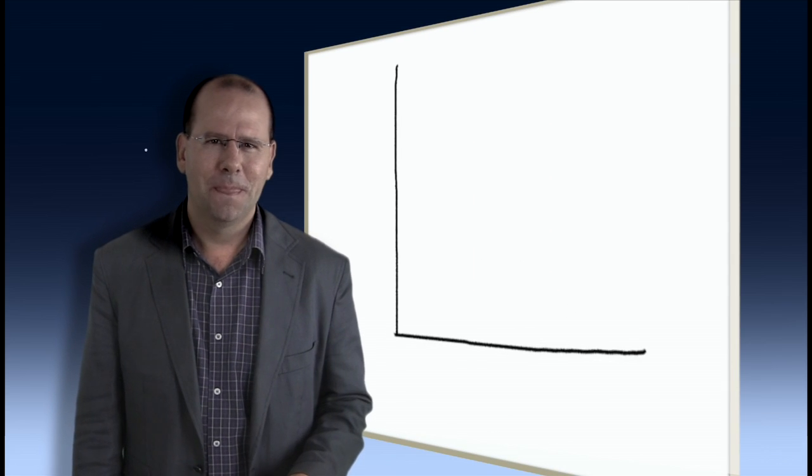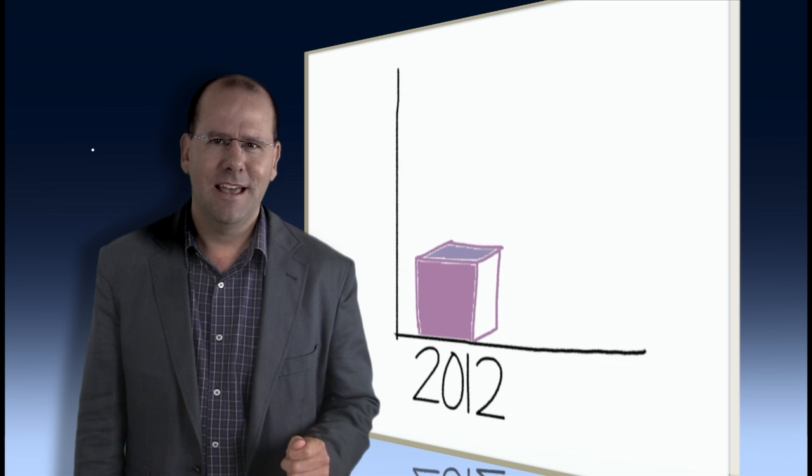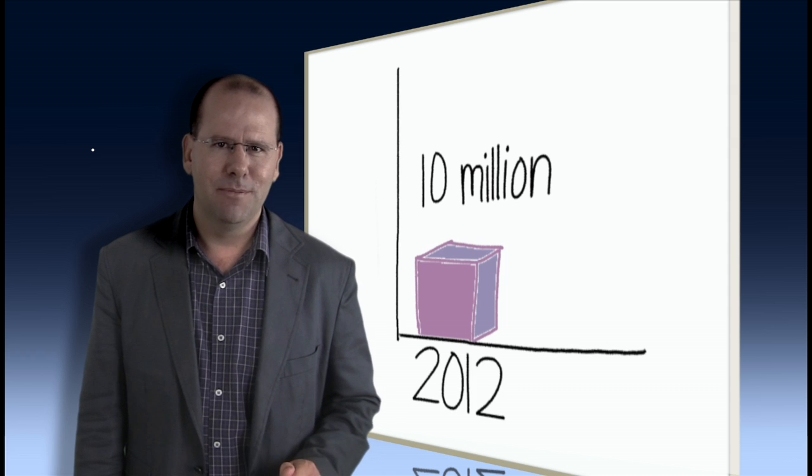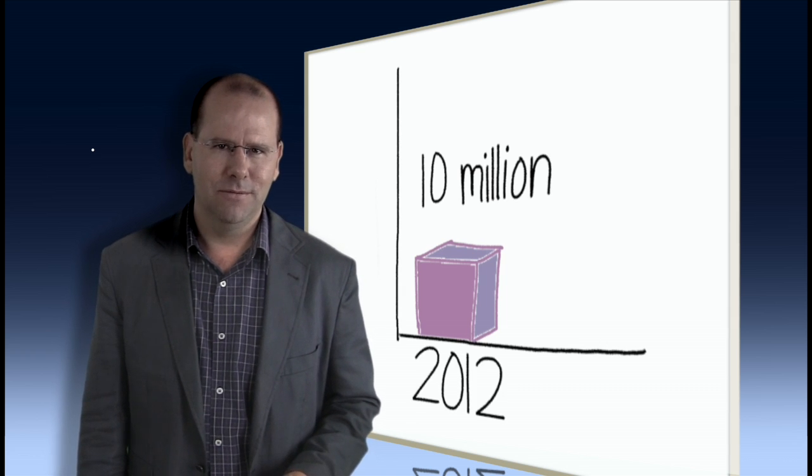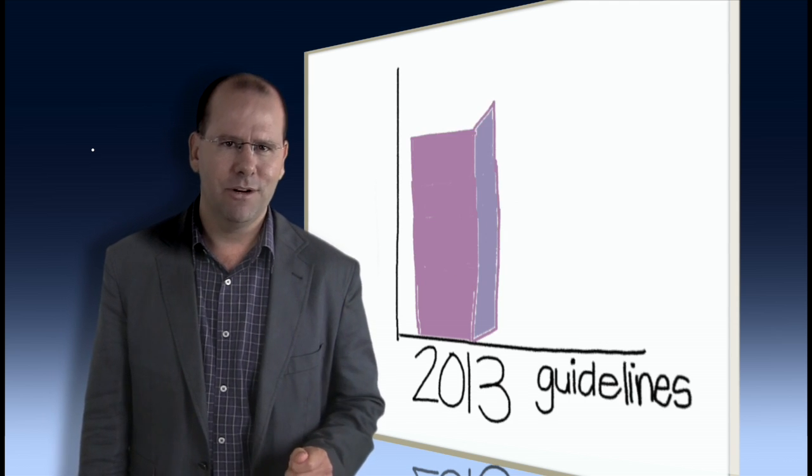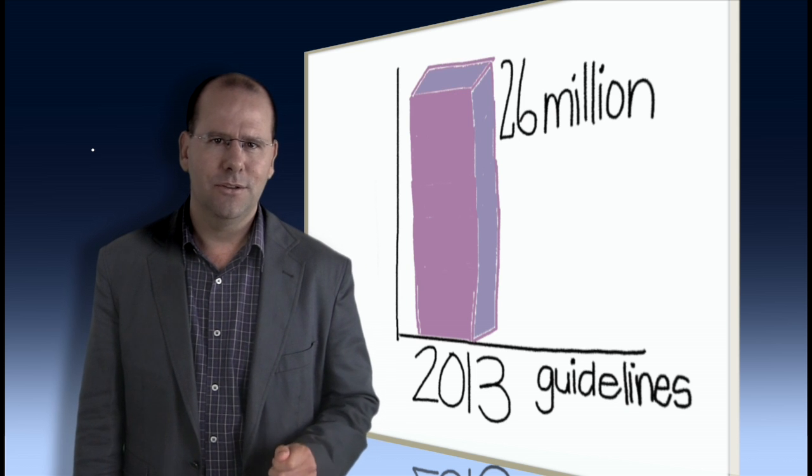Fact number six. Close to 10 million HIV positive people had access to antiretrovirals in low and middle income countries at the end of 2012. There are some 26 million people who will require access to antiretroviral drugs under the new 2013 guidelines.